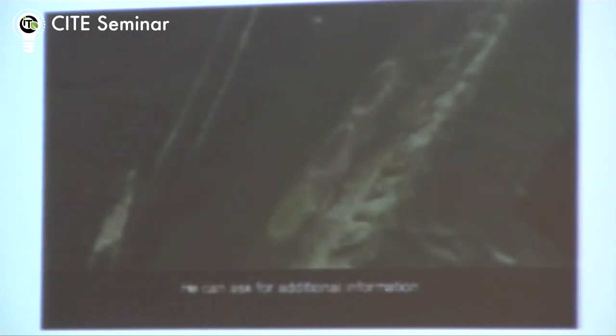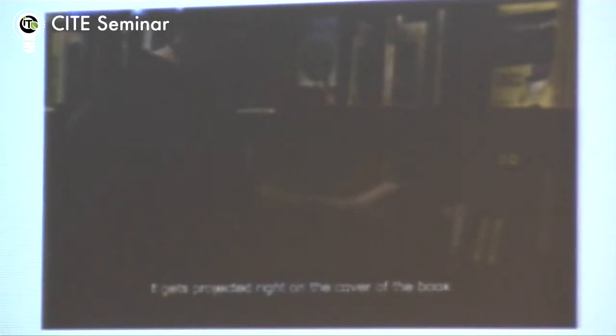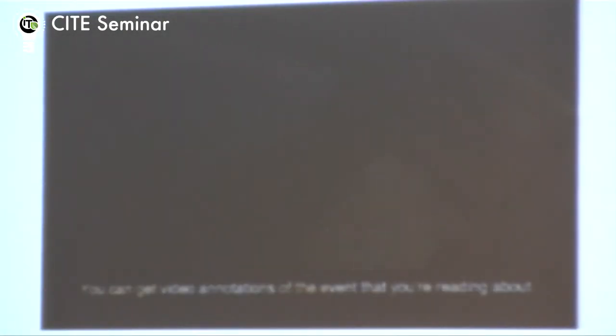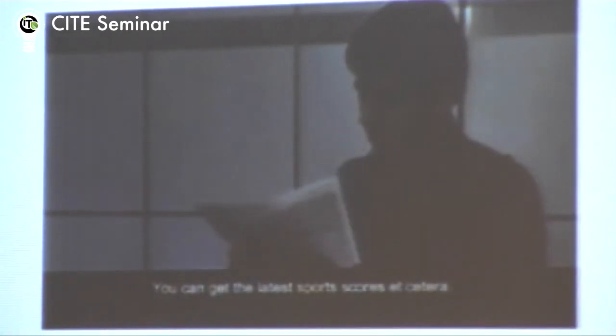The device can recognize products using image recognition or marker technology and give green or orange feedback. If a user picks up a book in a bookstore, the Amazon rating is projected right on the cover. Turning the page reveals additional information, reader comments, and annotations by experts or friends. Reading a newspaper, video annotations of events and the latest sports scores can be retrieved — it never has to be outdated.